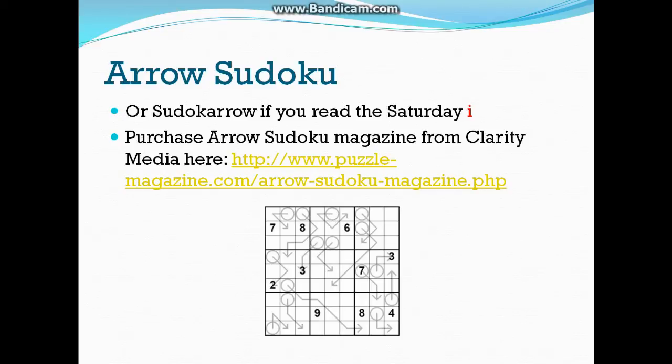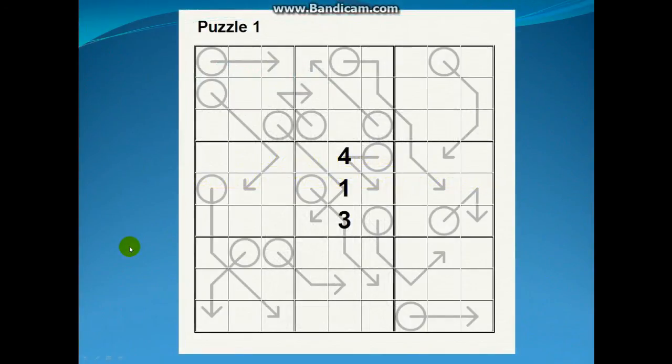So what is Arrow Sudoku? Well, the normal rules of Sudoku apply, but we've also got these arrows and circles. The arrows end in a circle, and the rule here is that all the numbers along the arrow must total the number in the circle.